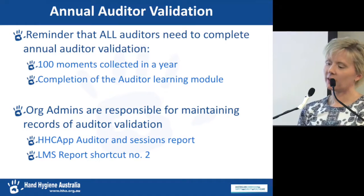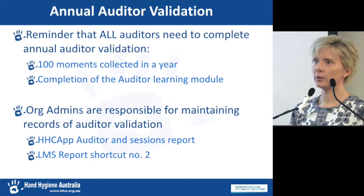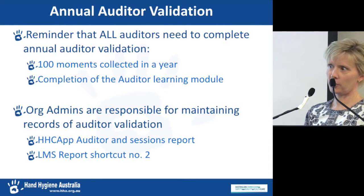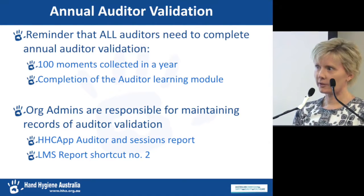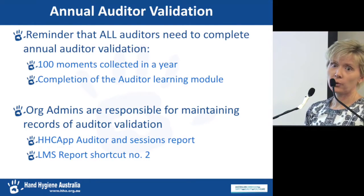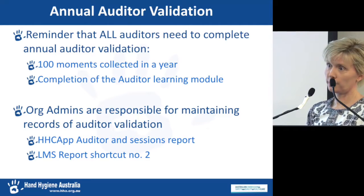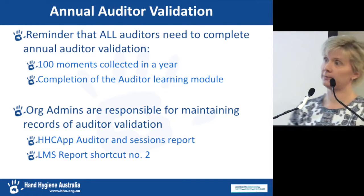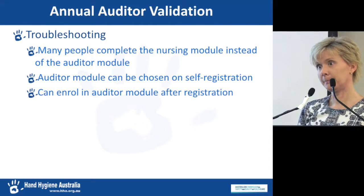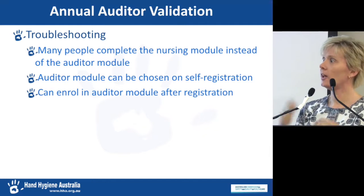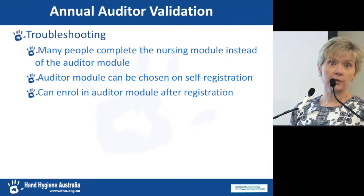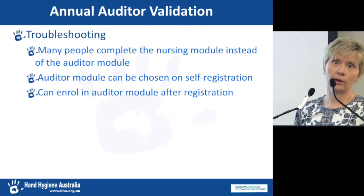Annual auditor validation is something we strongly encourage all auditors to keep up to date with — collecting 100 moments in a year and completing the annual auditor validation module. Shortcut report number 2 is the one to run to see if auditors have completed the annual validation module. Marry that with the auditor sessions report for the 100 moments data, and you can check whether all your auditors are valid. Many people say they've completed it but have actually completed the nursing module instead, so check which module they've completed.